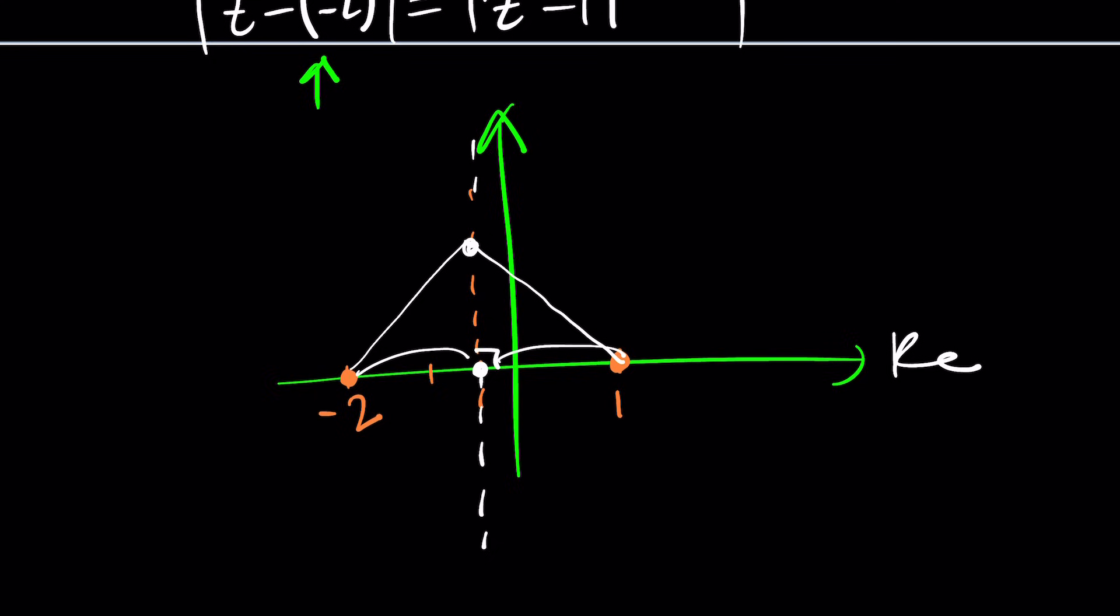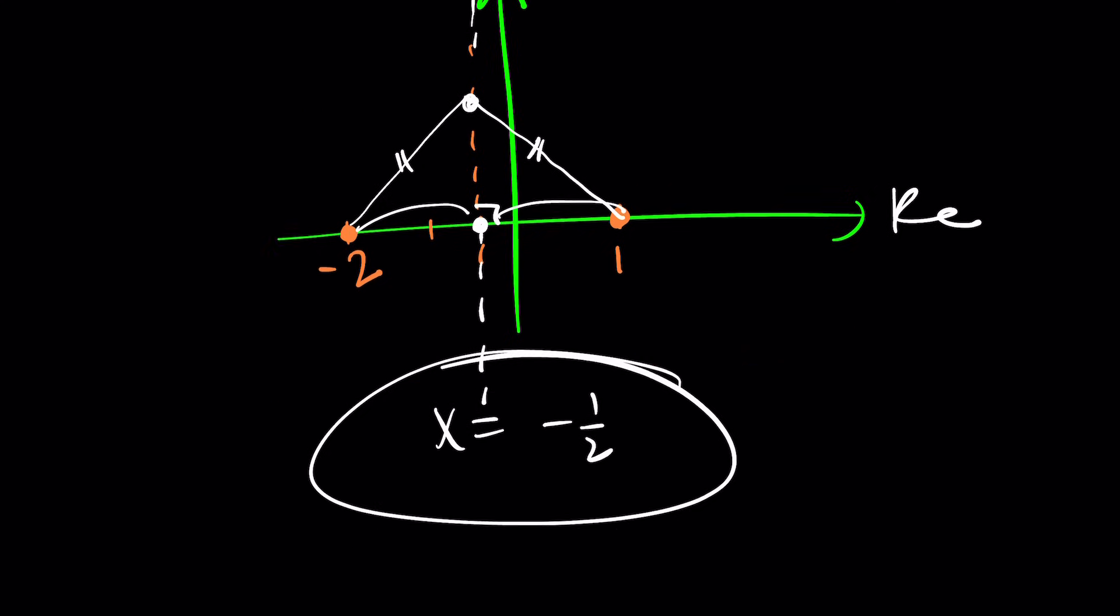the distances are going to be equal because guess what? You're forming isosceles triangles. The base is from negative 2 to 1, and the height is the line that we were given by. So, in other words, x equals negative 1 half is going to be the solution to this locus problem, but from a distance standpoint.